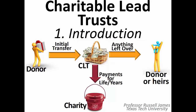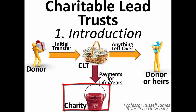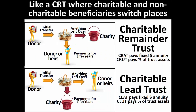In both charitable remainder trusts and charitable lead trusts, the donor makes a gift to the trust, which then holds the assets, makes regular payments, and finally distributes the remaining amount at the end of the term of the trust. Unlike charitable remainder trusts, which provide payments to the donor or another person followed by the remaining amount going to charity, the charitable lead trust provides payments to the charity, followed by the remaining amount going to the donor or another person. The charitable lead trust is a mirror image of the charitable remainder trust, where the charitable and non-charitable beneficiaries change places.